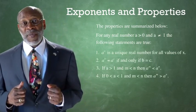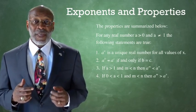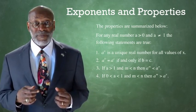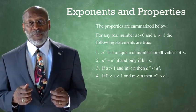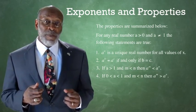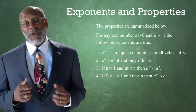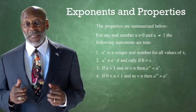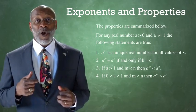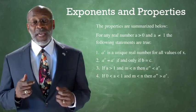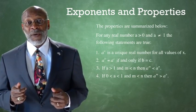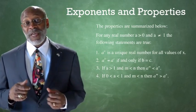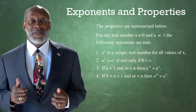Property 1: A raised to the power x is a unique number for all values of x. Property 2: A raised to the power b equals A raised to the power c if and only if b equals c. This follows from property 1, since A to the x is unique — therefore if A to the b equals A to the c, b must equal c.